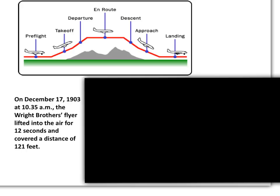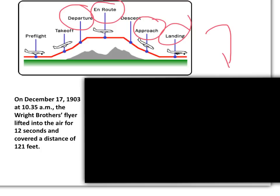They covered all the phases of flight, which are: pre-flight, takeoff, departure, en route, descent, approach, and landing. For more details, you can watch this three-minute video about the Wright brothers.